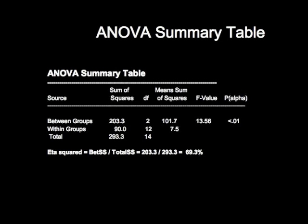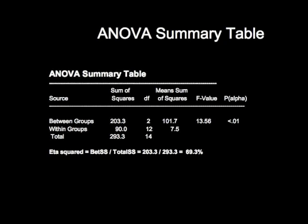Finally, the eta square at the bottom of the table gives you the proportion of variation in the dependent variable accounted for by the independent variable. In this particular case, we account for a sizable percent of that variation — over 69% of the variation.